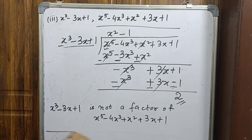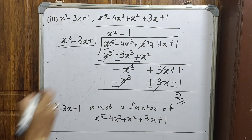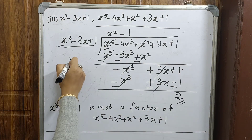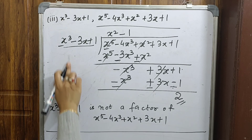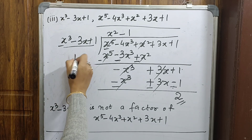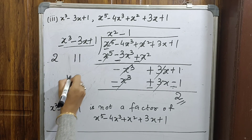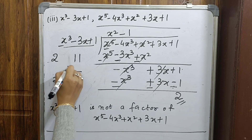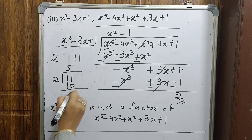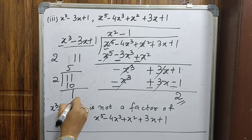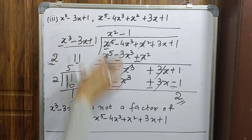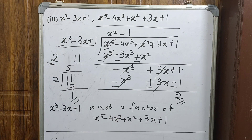To illustrate, 2 is not a factor of 11. When we divide 11 by 2, we get a remainder of 1, confirming 2 is not a factor of 11. Thanks for watching — we'll meet in the next video with a new lesson.